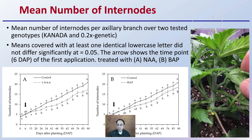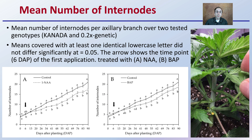Now the number of internodes: we're looking at the mean number of internodes per axillary branch over two tested genotypes. Means covered with at least one identical lowercase letter did not show significance at a p-value of 0.05. The arrow shows the time point at 60 days after planting for the first application, treated with the auxin and the cytokinin respectively. We see a similar pattern — the control having more internodes than either the auxin family or the cytokinin family hormone. That's true shortly after application, when both were applied, and then we see that separation after that point.